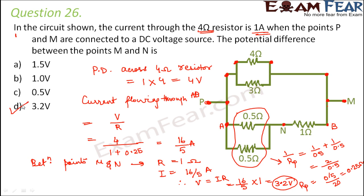Whenever you have these kinds of circuit problems, just try to see what information you can extract from the diagram. For example, here, since you are given the resistance as well as current across a particular resistor, just calculate the potential difference and see how best you can use that value of potential difference.